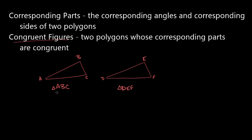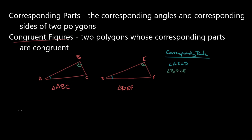When I name them triangle ABC and triangle DEF in this way, it corresponds to the parts matching up in that order. So what would it take for these two triangles to be congruent? I need all their corresponding parts to be congruent. The corresponding angles required are: angle A congruent to angle D, angle B congruent to angle E, and angle C congruent to angle F.